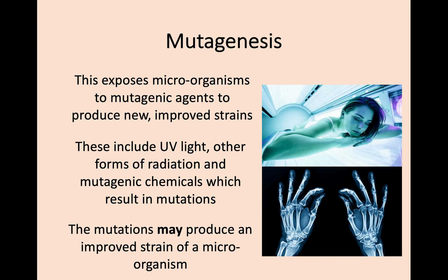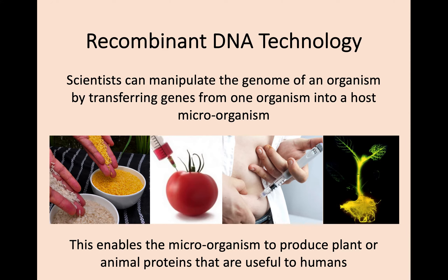Mutagenesis involves exposing microorganisms to mutagenic agents with the aim of producing new improved strains. This includes forms of radiation such as UV light, or mutagenic chemicals, to deliberately cause mutations. The issue here is that you are very much gambling — you may cause a bad mutation, or a mutation with no real impact, but you may at some stage end up with an improved version.